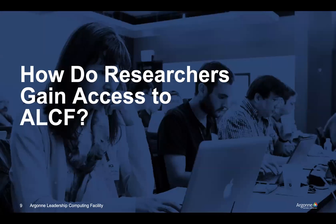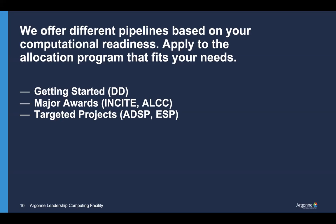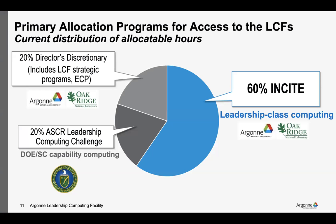How do you gain access to these systems, and what do these allocation programs look like? There are different tiers. We have pipeline projects through different types of awards — things like getting started through our Director's Discretionary, targeted acceleration programs through the Data Science program and Early Science, and then moving into our major awards: INCITE and ALCC. I'll describe every one of these and unwind all of the acronyms, because this is an acronym-heavy topic.